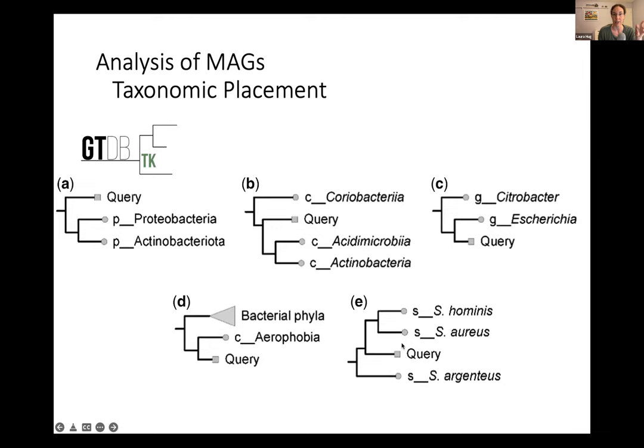That's taxonomic placement. You'll see the difference that information can make in the way you analyze a community in the tutorial, because you'll see the bins on their own and then the bins with taxonomy applied, and how that allows you to ask a different question.